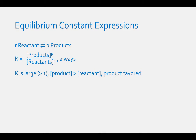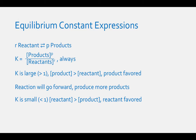Since the equilibrium constant equals products over reactants, if the equilibrium constant is large — greater than 1 — then the concentration of products is greater than the concentration of reactants, and we say the reaction is products favored. This means the reaction will tend to go in the forward direction and create more products. If the equilibrium constant is small — less than 1 — then the concentration of reactants is greater, and we say the reaction is reactants favored, meaning it will tend to go in the reverse direction.